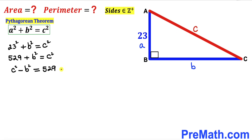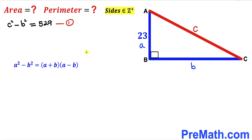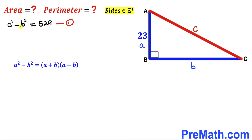Now let's recall the famous difference of squares identity: a² - b² = (a + b)(a - b). In other words, the difference of two squares equals the product of their sum and difference. We are going to apply this identity to the left-hand side of equation one, giving us (c + b)(c - b) = 529.